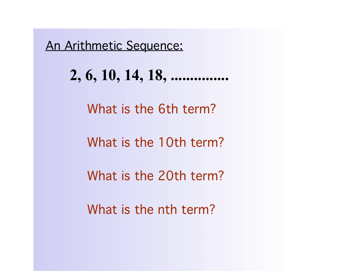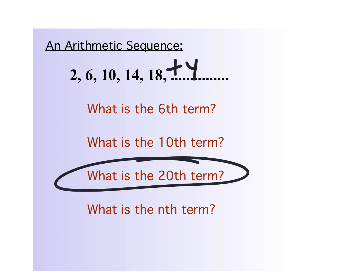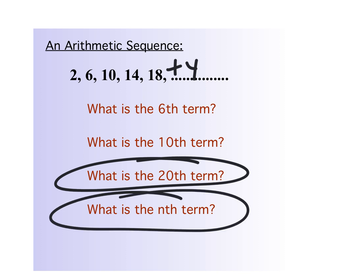This is an arithmetic sequence. What are they doing each time? They're adding 4. It wouldn't be too hard to just keep adding 4 until you get to the sixth term. But when they ask for the 20th term you'd be getting annoyed, and when they ask for the nth term, you'd be totally stuck — you couldn't use that way. So you need a formula.